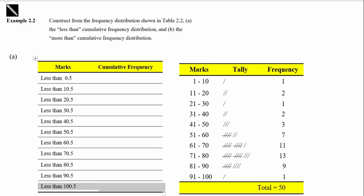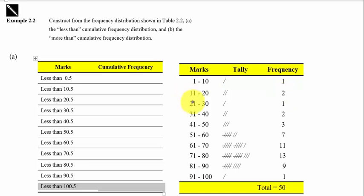This is a video to show you how to find the less than cumulative frequency distribution. We are given the test results of 50 students. In the result, we have one student scoring between 1 to 10 marks, two students scoring between 11 to 20 marks, one student scoring between 21 to 30 marks, two students scoring between 31 to 40 marks, and so on.